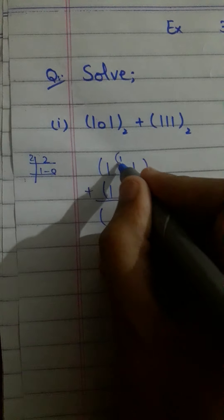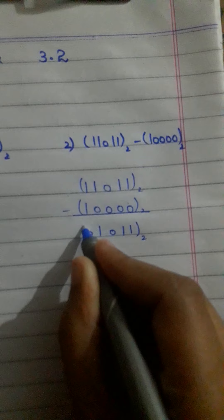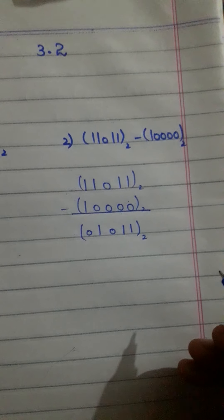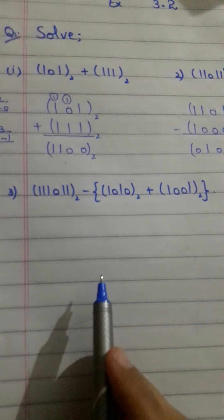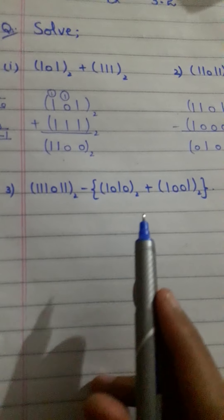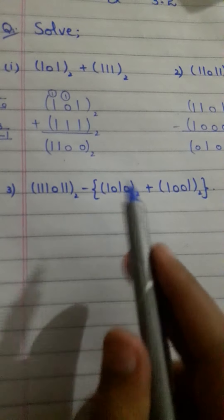Now we will talk about subtraction. In base 2 subtraction: 1 minus 1 equals 0. And 1 minus 0 equals 1. Clear?